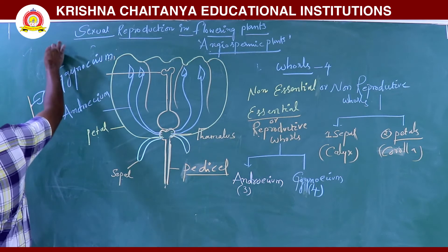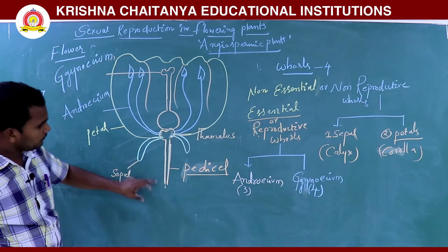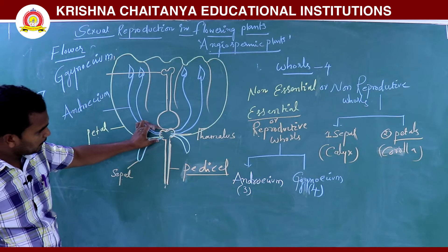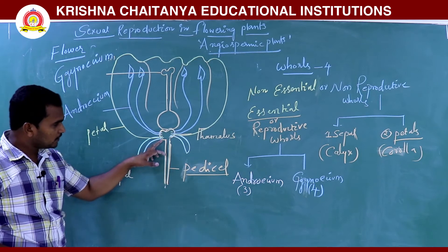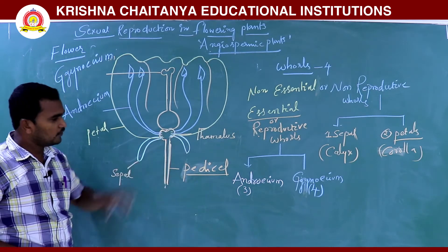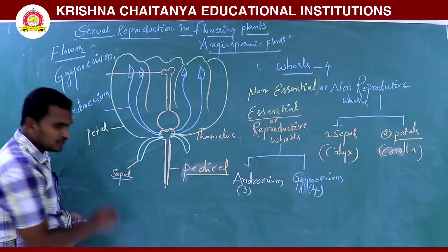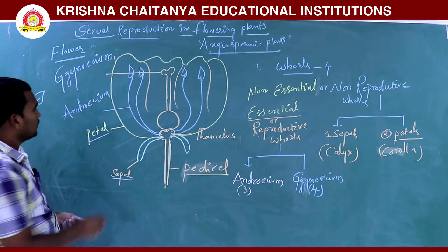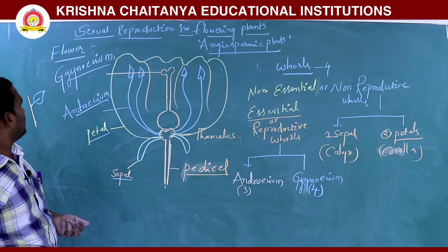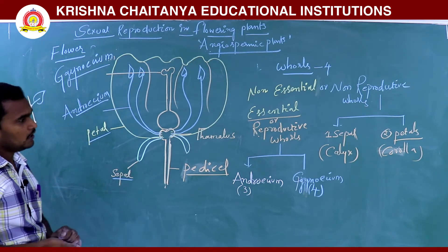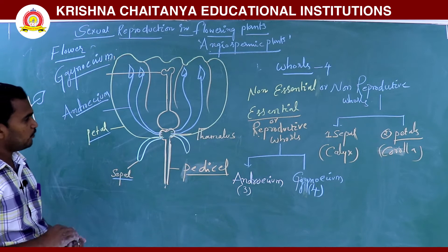So in the flower diagram: there is the pedicel, on the tip of the pedicel there is the swollen thalamus, on the thalamus four condensed nodes are there producing — first sepal, second petal, third androecium, fourth gynoecium. Total four floral whorls are there.